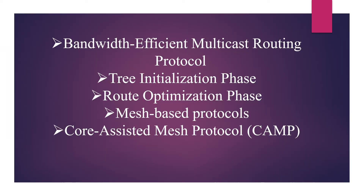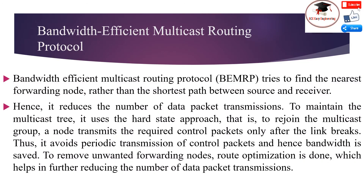Bandwidth Efficient Multicast Routing Protocol (BEMRP) covers three main phases: Tree Initialization Phase, Root Optimization Phase, and Mesh Based Protocol, including Core Assisted Mesh Protocol. BEMRP tries to find the nearest forwarding node rather than the shortest path between source and receiver, hence reducing the number of data packet transmissions.